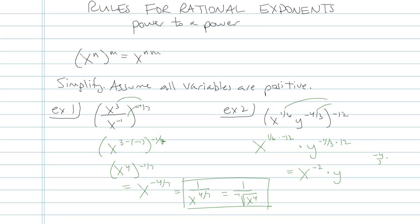One-sixth of negative twelve is negative two. And then negative four-thirds of twelve, if you're not sure how to do that, write it out as negative twelve over one, and then multiply across the top and multiply across the bottom. Forty-eight over three. So I'll have y to the forty-eight over three power. Forty-eight over three reduces to sixteen, so here I have y to the sixteenth.